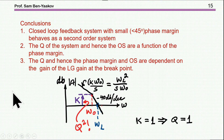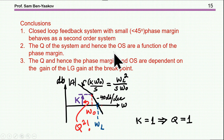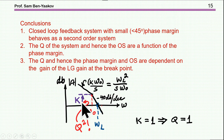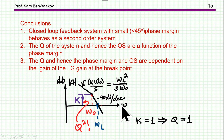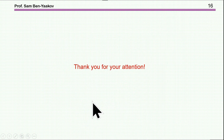What are the conclusions? We found that a closed-loop feedback system with small phase margin behaves as a second-order system, and the Q and hence the overshoot are a function of the phase margin. The Q and the phase margin also depend on the gain K — the height of the breakpoint — which has a clear relationship to the other parameters we care about in feedback system behavior. This brings me to the end of the presentation. Thank you very much for your attention. I hope you found it of interest and useful.